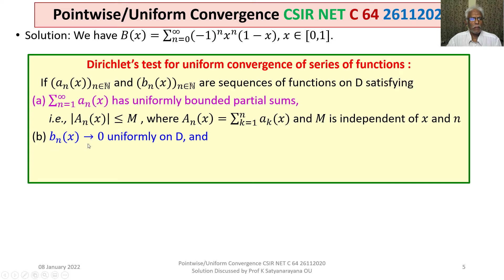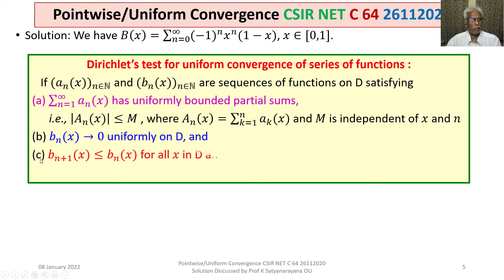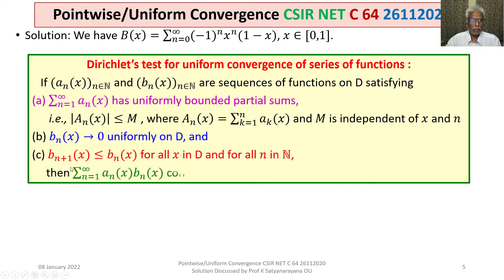Condition 2: b_n(x) tends to 0 uniformly on D as n tends to infinity. Condition C: b_{n+1}(x) ≤ b_n(x) for all x in D and all n in N. Then the series sigma a_n(x) · b_n(x) converges uniformly on D.